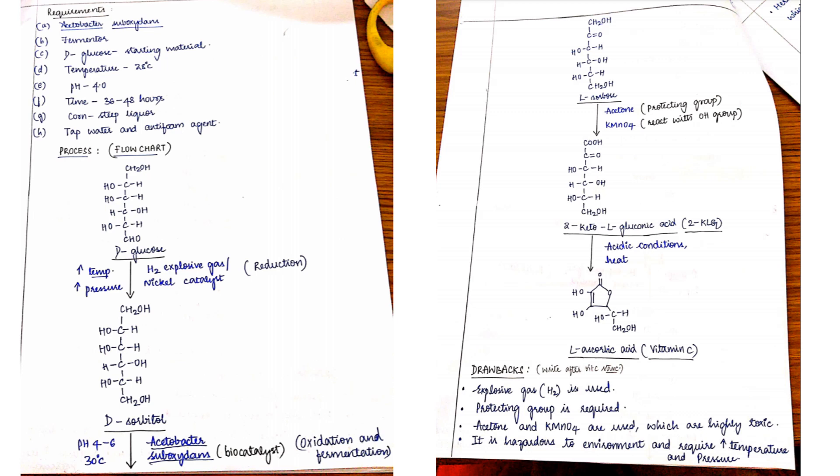To grow a microorganism, we require optimum temperature, optimum pH, time should be proper. And then substrate - ultimately you will get a proper yield.